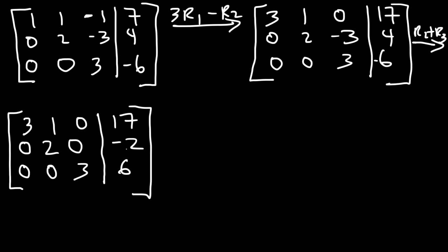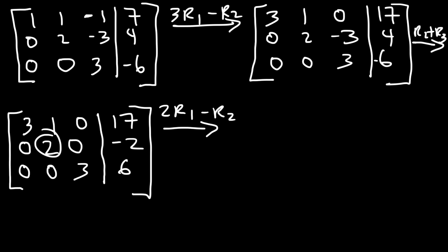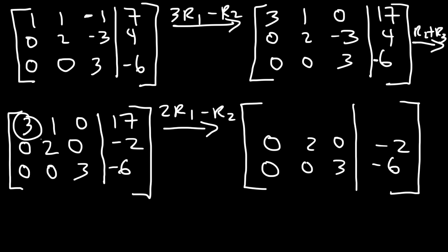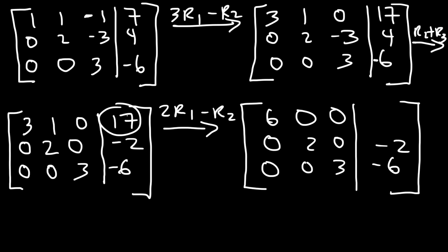The next thing is to convert the remaining off-diagonal entry in row 1 into a 0. I'll take 2 times R1 and subtract R2, applying it to row 1. The result: column 1 gives 2 times 3 minus 0 = 6, column 2 gives 2 times 1 minus 2 = 0, column 3 gives 2 times 0 minus 0 = 0, and column 4 gives 2 times 17 minus negative 2 = 34 plus 2 = 36.